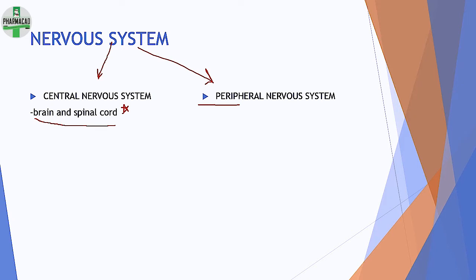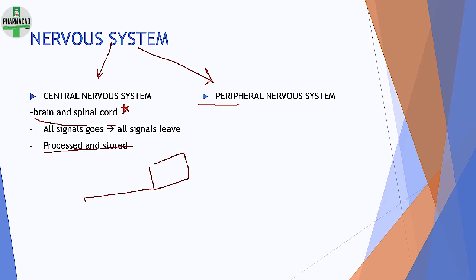Central nervous system is concerned with the brain and spinal cord — these two are the central organs on which our nervous system is based. In the CNS, all information goes in, is processed, and then stored. Signals come here, go to the brain; some signals go directly to the spinal cord in a reflex arc, and then they act, or they may go to the brain and then act.